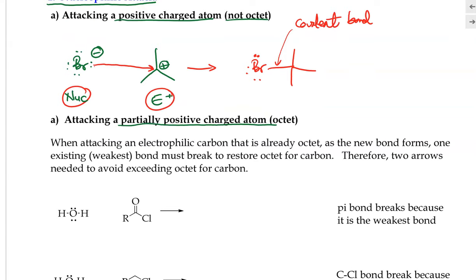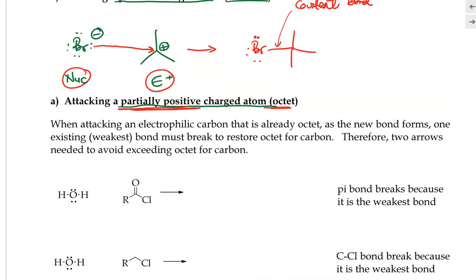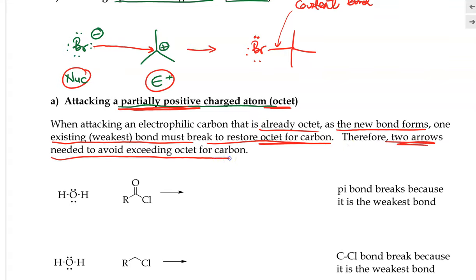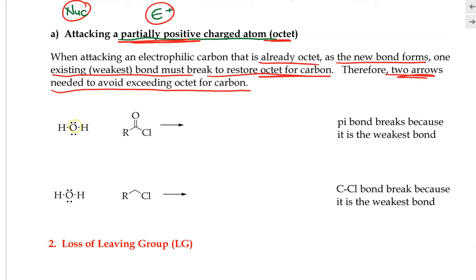We can also have a nucleophilic attack where the attack happens on a partially positive atom that already has an octet of electrons. When attacking an electrophilic carbon that is already at octet, as the new bond is being formed, one of the existing bonds must be broken in order to restore the octet for the carbon. Therefore, two arrows are needed. Here we have a lone pair of electrons on an oxygen, which is a good nucleophile, attacking a partially positive carbon — a good electrophile.